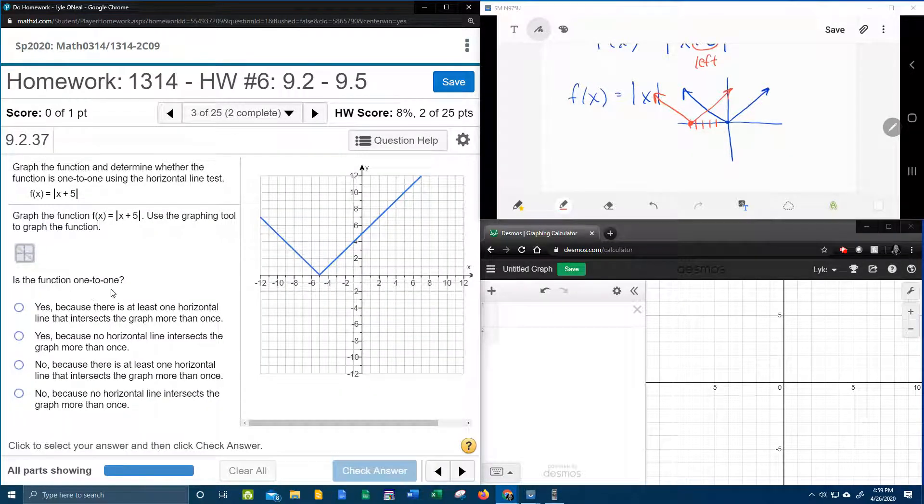And then it says, is this function one to one? Well, if I use the horizontal line test going across, I can see that a horizontal line will touch more than once. And so that is a no.